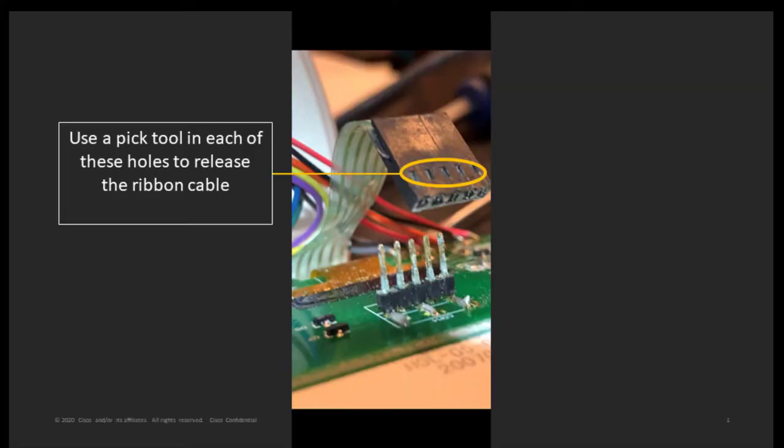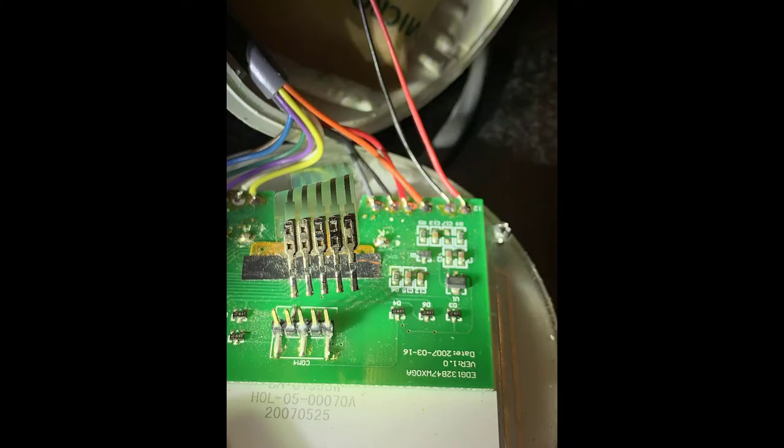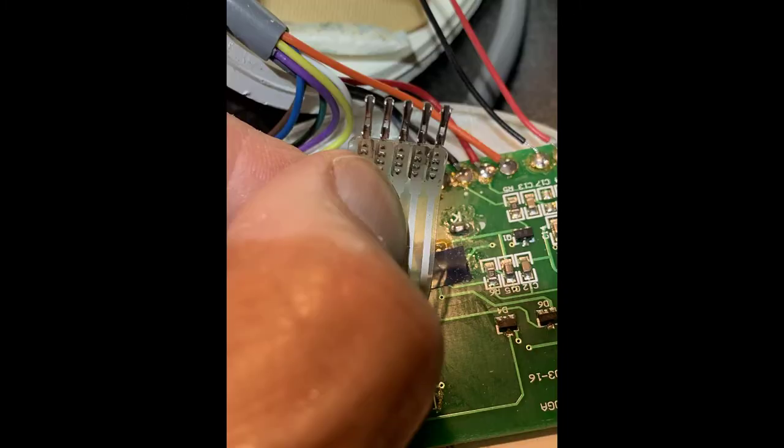Next you want to use a pick tool, poke it into each one of these little holes and the ribbon cable will slide out and it'll look like this on both sides. You'll need to get in there with a nail file or an emery board or something and sand those contact points as well.